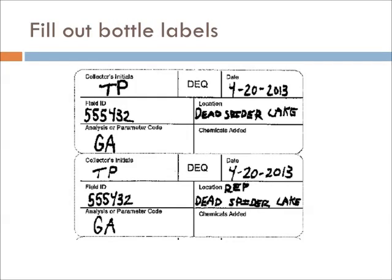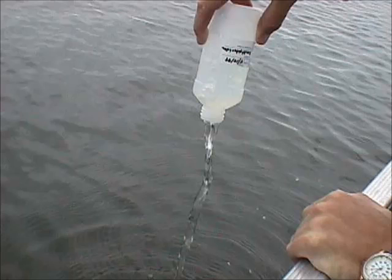Prior to sampling, fill out the two sample labels as shown and attach the labels to the bottles. You must use a permanent black marker to do this, because water-soluble ink will run when it gets wet. In the box for parameter code, write GA. On the second label, write REP in the location box, indicating that this is for the replicate sample. All volunteers will take two water samples. Using only the sample bottles provided, remove the cap of one bottle, being careful not to touch or contaminate the inside of the bottle cap or bottle. Grab the bottle at the bottom and rinse twice. No dust or dirt particles should be in the bottle, but just in case, rinsing the bottle removes anything that may have gotten into it.